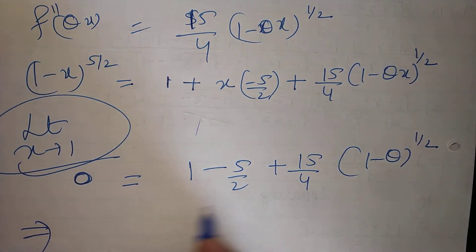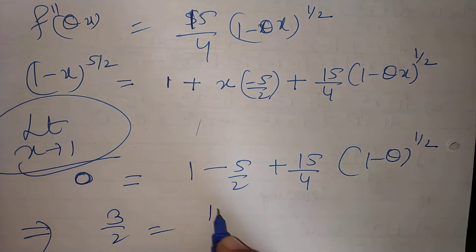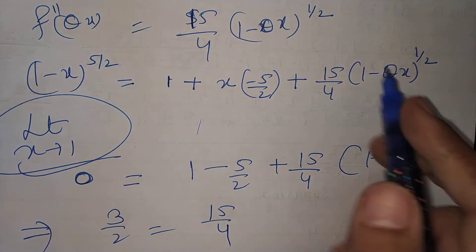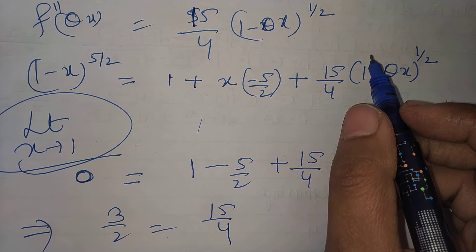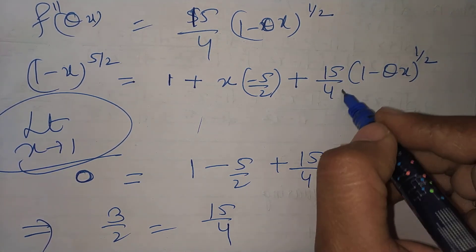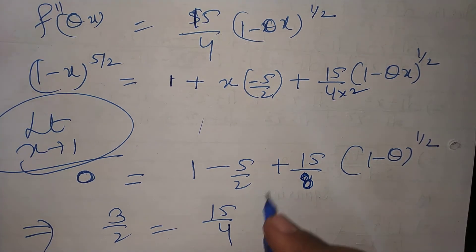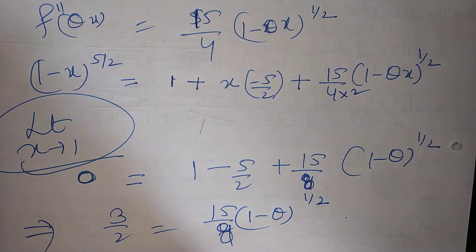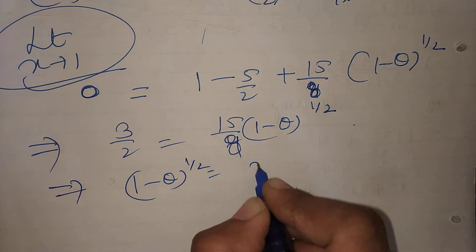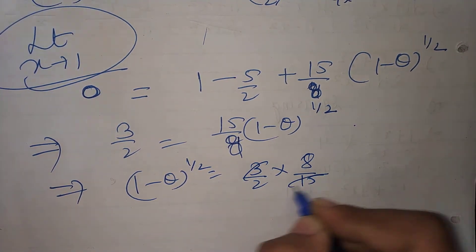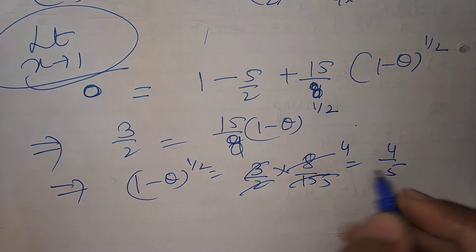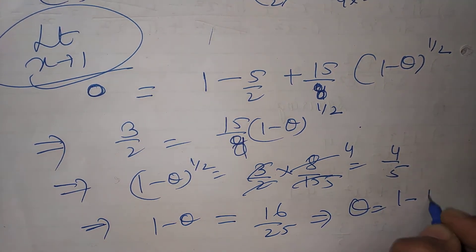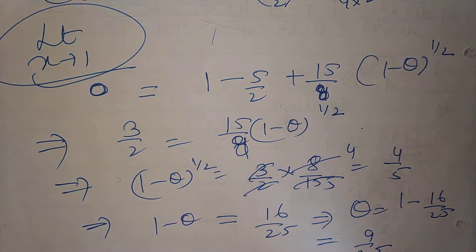Putting all values: (1-x)^(5/2) = 1 + x(-5/2) + (x²/2)(15/4)(1-θx)^(1/2). Taking the limit as x→1 on both sides: LHS → 0, RHS → 1 - 5/2 + 15/8 · (1-θ)^(1/2). So 0 = 1 - 5/2 + 15/8·(1-θ)^(1/2), giving -3/2 = -15/8·(1-θ)^(1/2), so (1-θ)^(1/2) = 4/5, meaning 1-θ = 16/25, thus θ = 9/25.